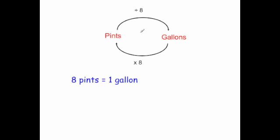To convert between pints and gallons, to go from pints to gallons you divide by 8. For instance, 8 pints divided by 8 equals 1 gallon. To go from gallons into pints you multiply by 8. So 1 gallon times 8 equals 8 pints.